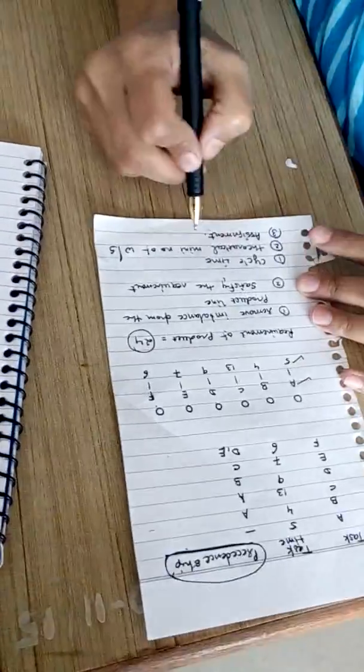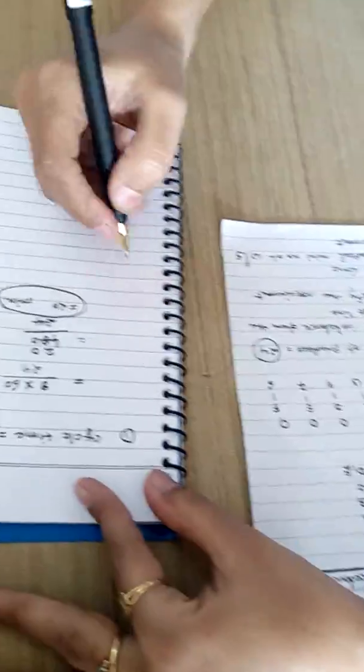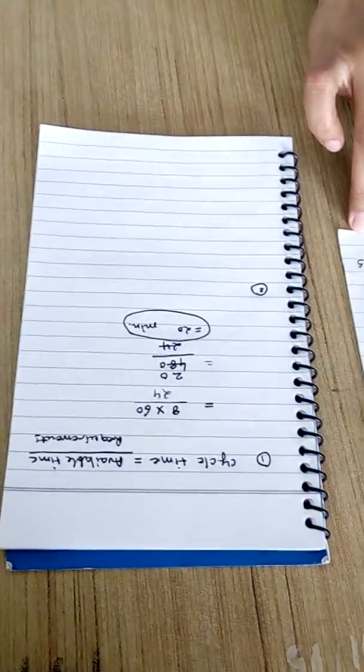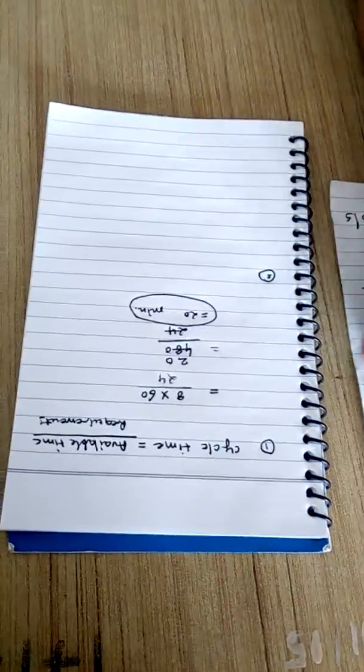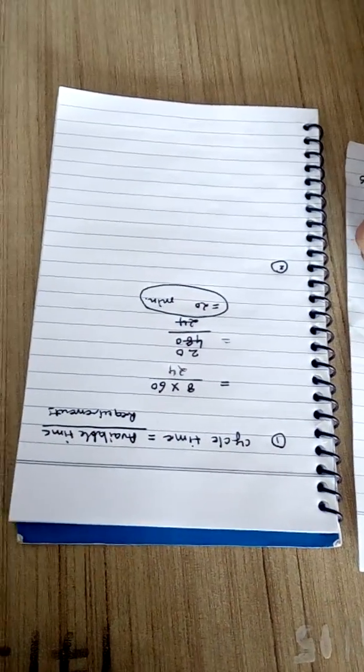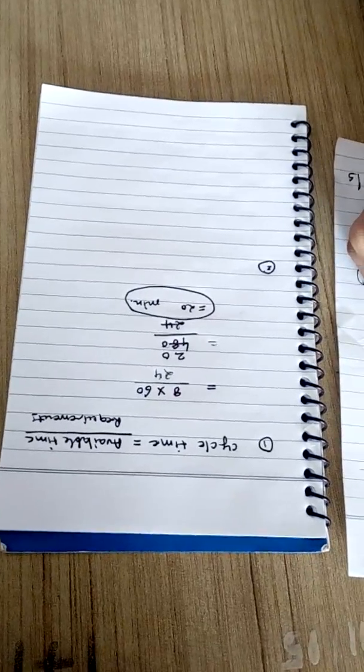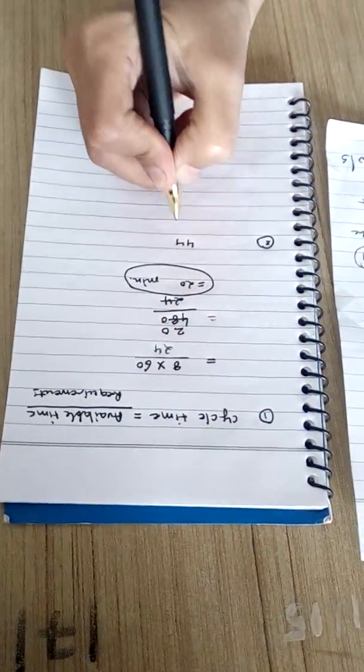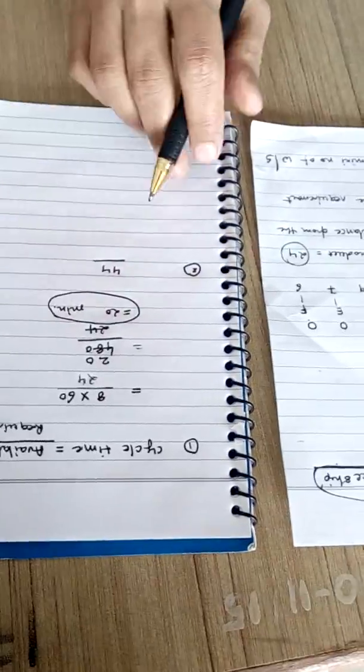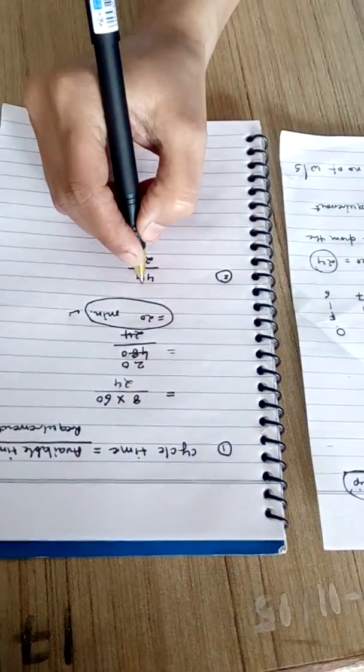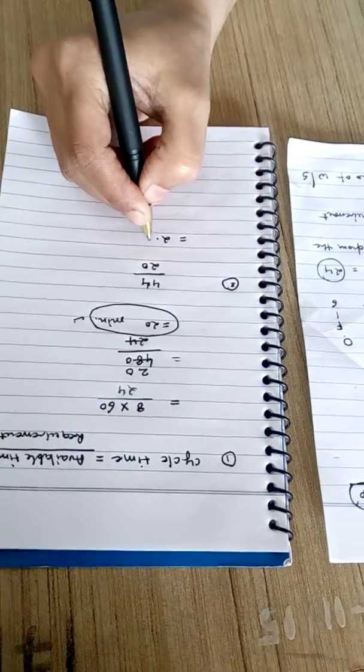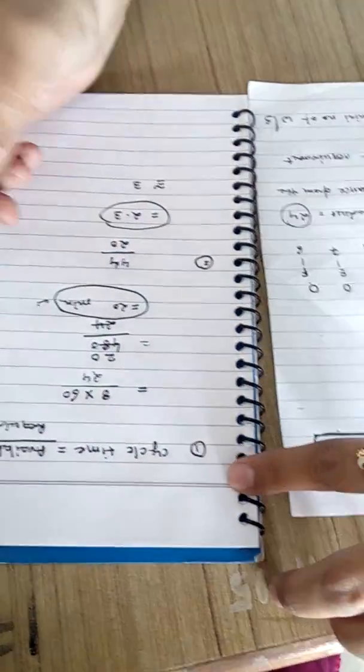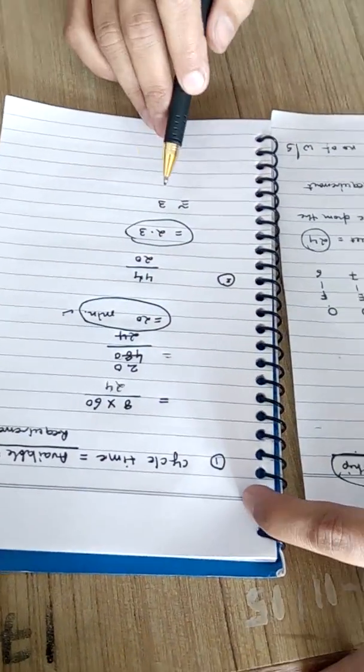Now we have to find the theoretical minimum number of work stations. How can we get that? To find out the theoretical minimum number of work stations we will add this task time. So this will come 5 plus 4, 9, 18, 24, 24 plus 7, 31, 31 plus 13, 44 divided by the cycle time that we find out. So it will be around 2.3. Since it is not a full number we will take it as 3. So now we have cycle time is 20 minutes and theoretical minimum number of work station is 3.